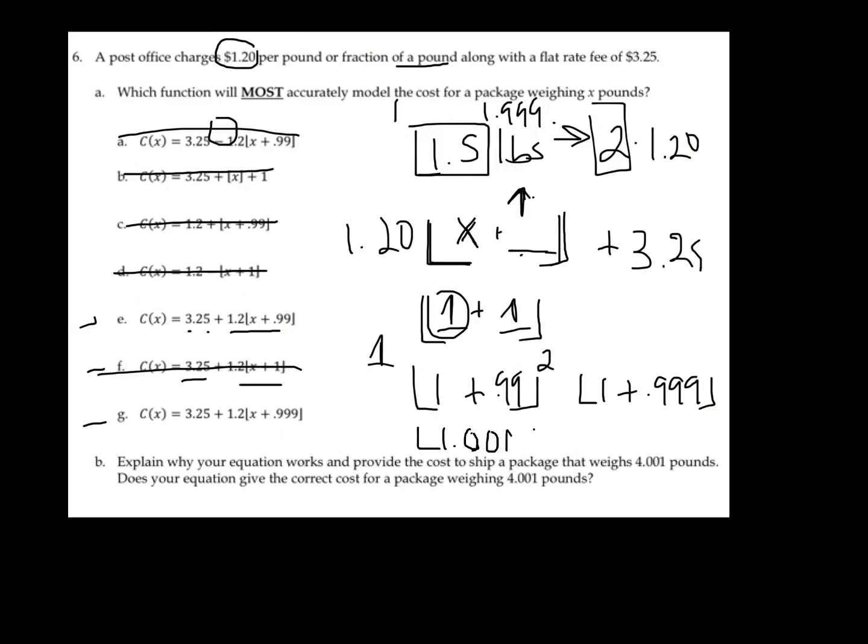Well, what would you have to add to 1.001 so that it would then, well, what should it round to? Think about it. This weighs more than a pound, right? So you should be charging them not just $1.20, but twice. $1.20 and another $1.20. So you want this to round up. Well, if you add 0.99 here, you're going to get 1.991. And that's still going to round down to 1. So this is not going to get it done.